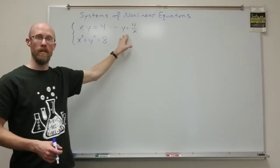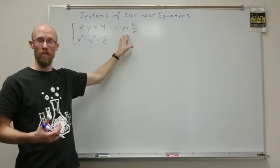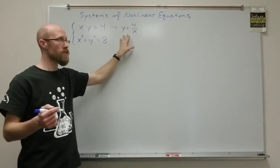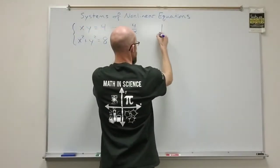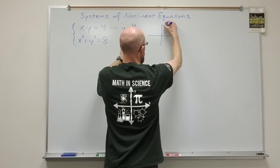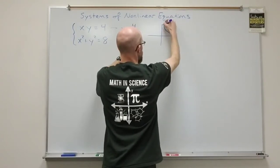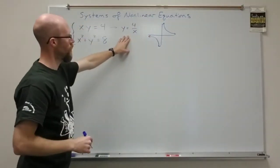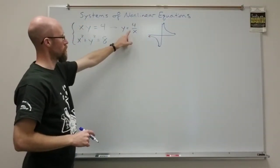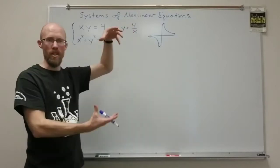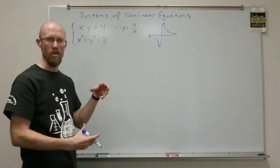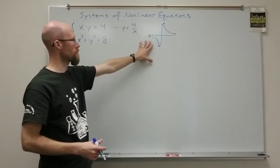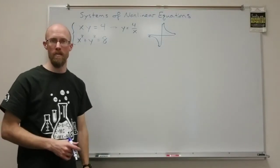If you'll remember, 1 over x gives us a graph that's in the first quadrant and down in the third quadrant. But this one has a multiple of 4, so it's kind of stretched out. It's stretched out, but it's the same idea, same asymptotes and everything.